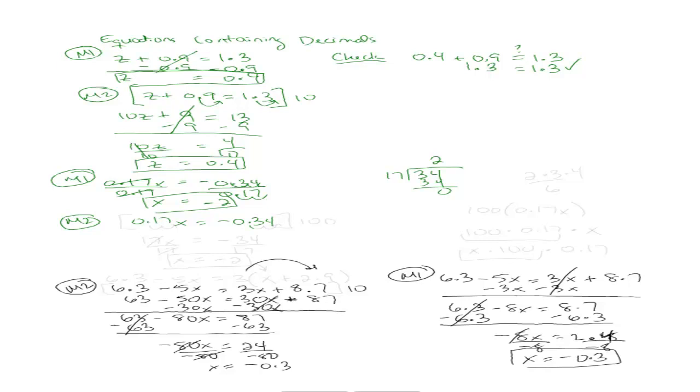100. So let's see what happens when I do that. When I multiply 0.17 times 100, it's going to move my decimal twice to the right, so I get 17x. When I multiply 0.34 by 100, it's going to move my decimal point to the right, and I'm going to get negative 34. And now if I divide by 17, I get x equals negative 2. Same answer, different way of getting it.